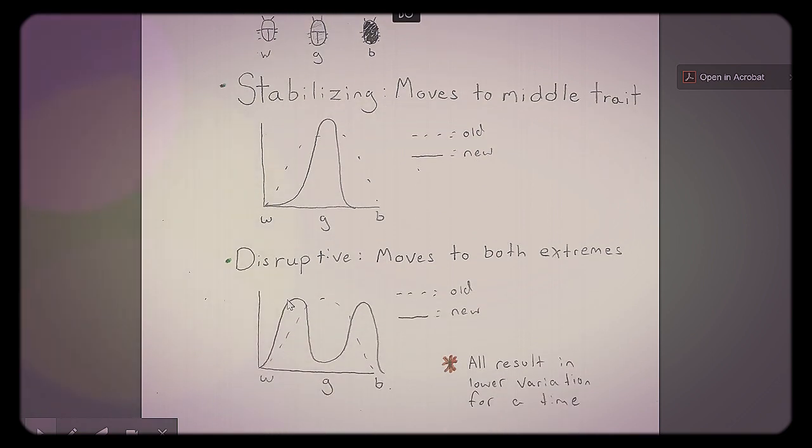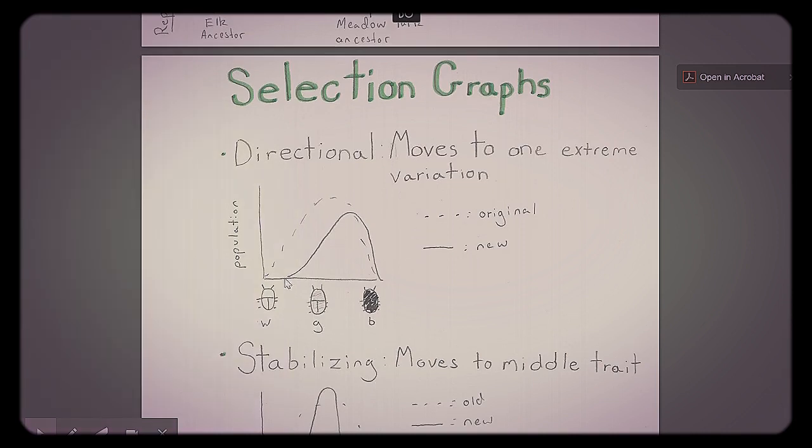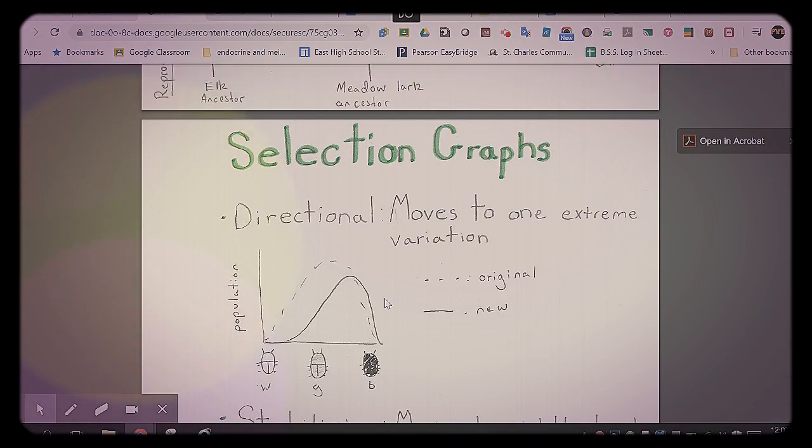And then disruptive is where it moves towards both extremes and goes away from the middle trait. So for whatever reason, white moths are successful. The gray ones are not. And the darker ones are also successful. But the gray ones go away. We can have this kind of split after selection. Both of these will result in a lower variation for a time. In this one, the white ones and the dark ones are going away, so you're left with gray. So now there's less traits. In this one, there's pretty much just mostly white and black, so there's less variation. In this one, it's moving away from the white, so there's just darker colors. So selection events can result in lower variation for a short time. And then mutation and sexual reproduction can introduce more variation into the population. After a short time. Take care.